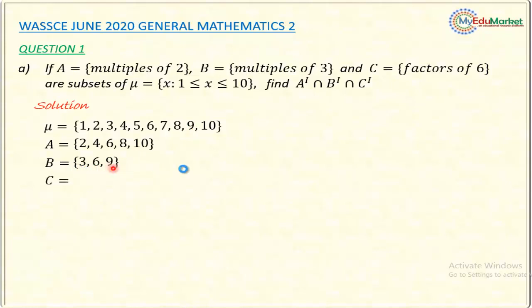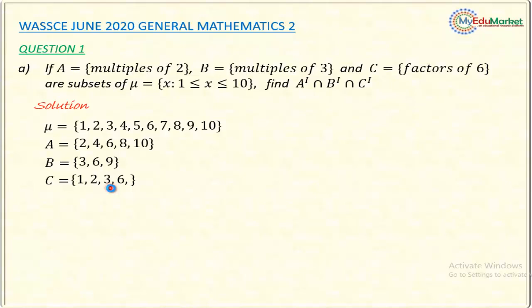The last set is set C, which says factors of 6 — those numbers that can divide 6 without a remainder, taken from the universal set. You can divide 6 by 1, 2, 3, and 6 with no remainder. So set C = {1, 2, 3, 6}.